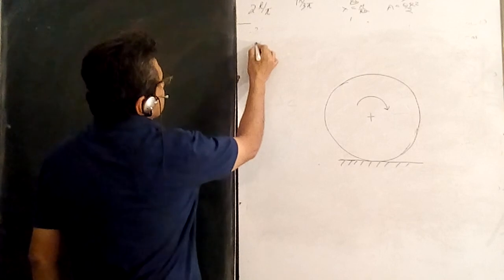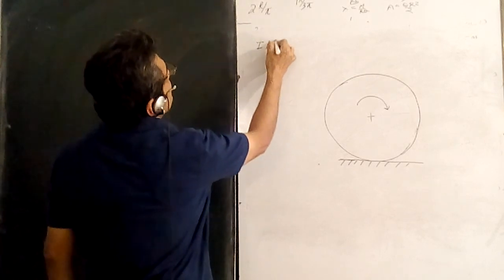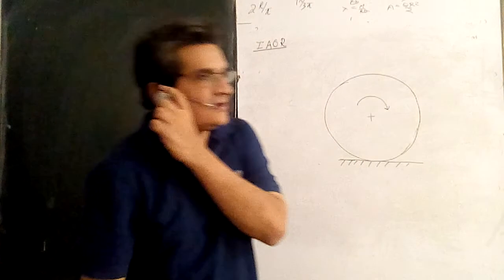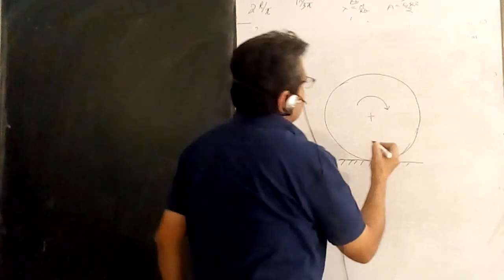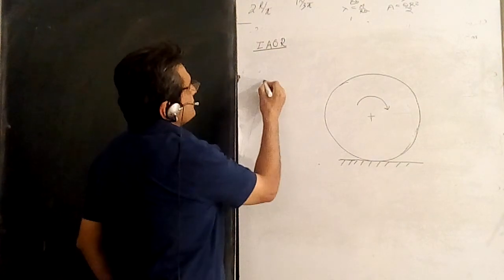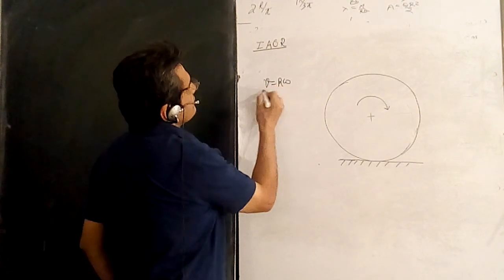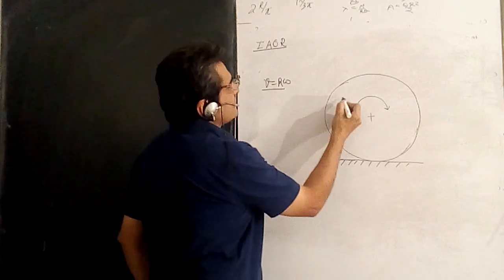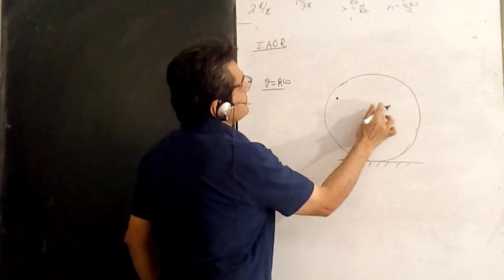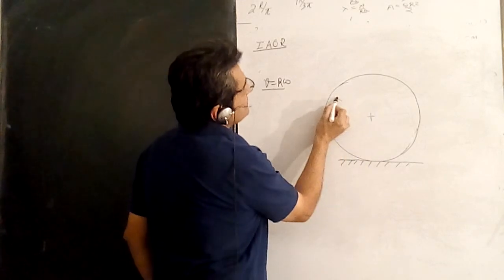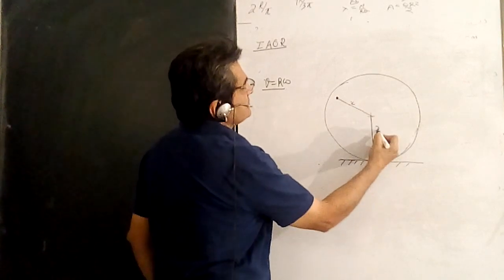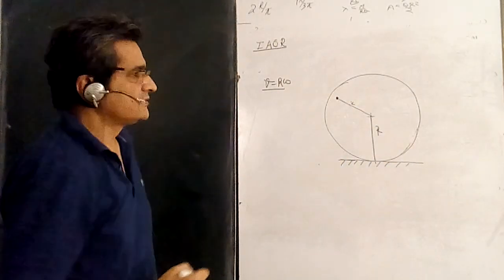In this lecture we will cover the instantaneous axis of rotation. This is relevant when you have rotational and translational motion, which is quite complex. Let us take a pure rolling where V equals R times omega. I want to find the velocity of any point — suppose there is a point at distance X from the center, and the radius is R.